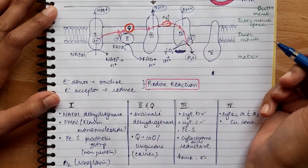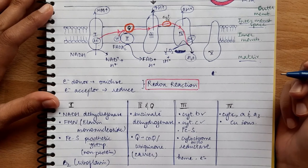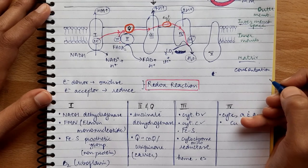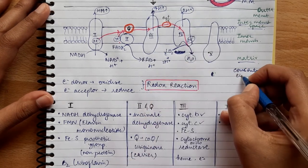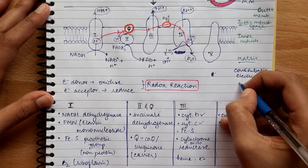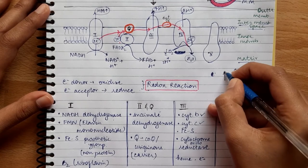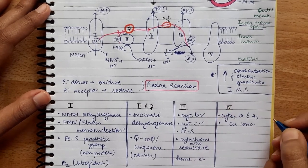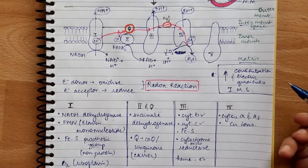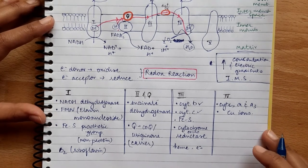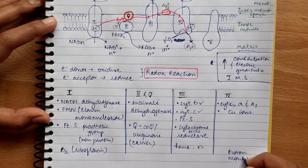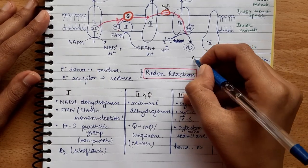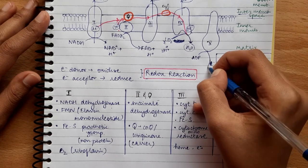So in total, 4 H⁺ from Complex 1, 4 H⁺ from Complex 3, and 2 H⁺ from Complex 4 are pumped into the inter-membrane space, creating a concentration gradient. Since H⁺ carries a charge, an electrical gradient also increases in the inter-membrane space. Because of this combined concentration and electrical gradient, a force develops which we call the proton motive force. This force helps drive the conversion of ADP to ATP.